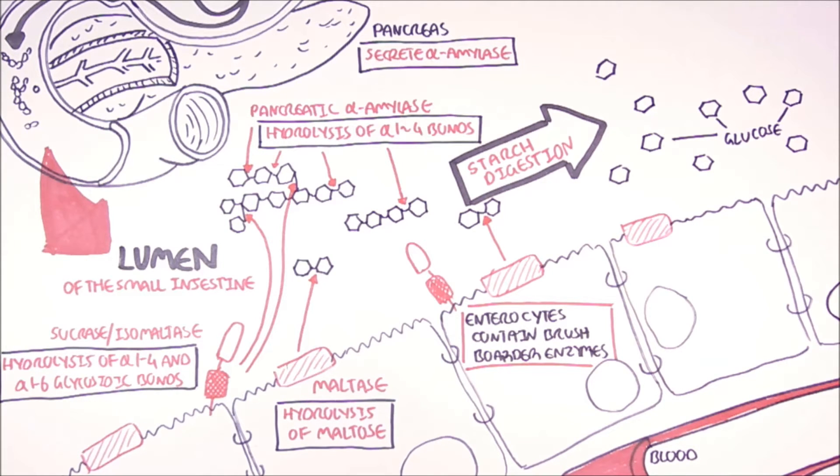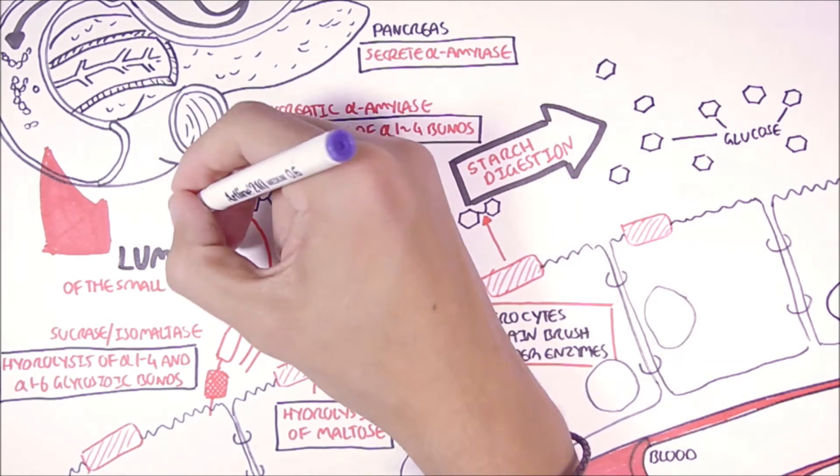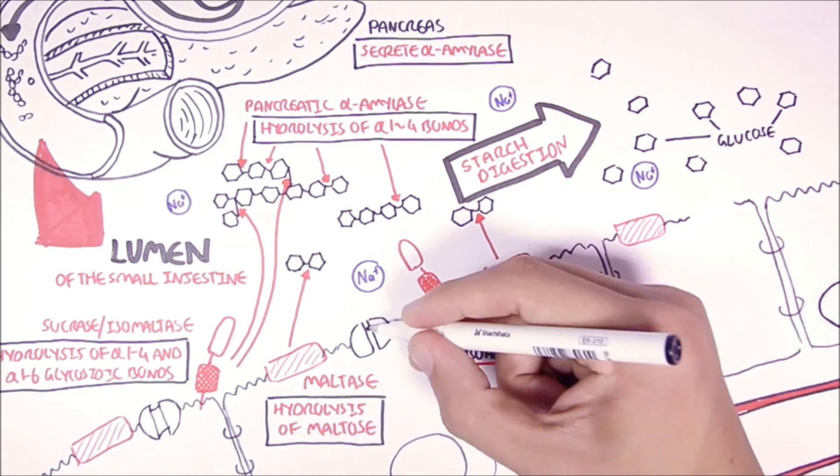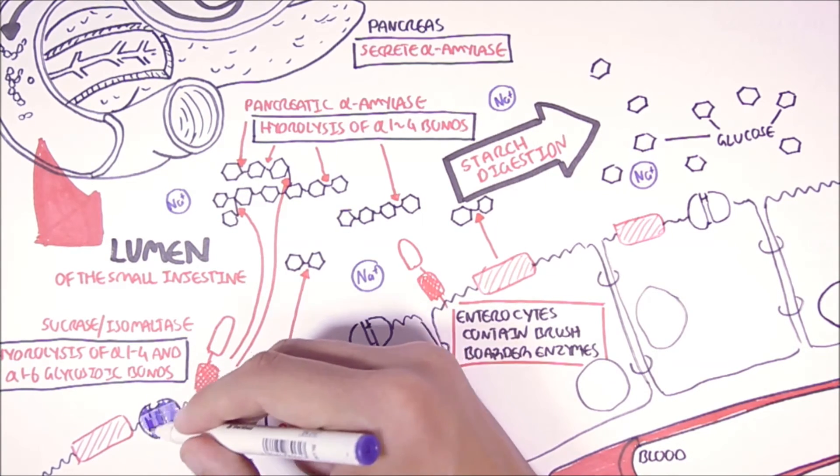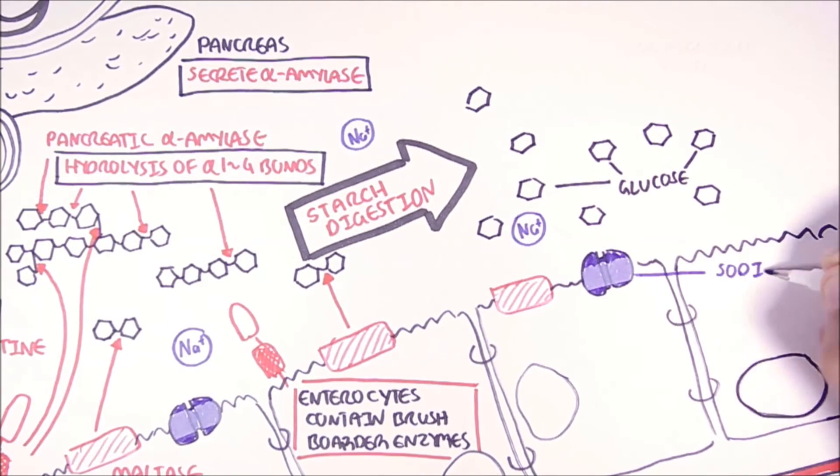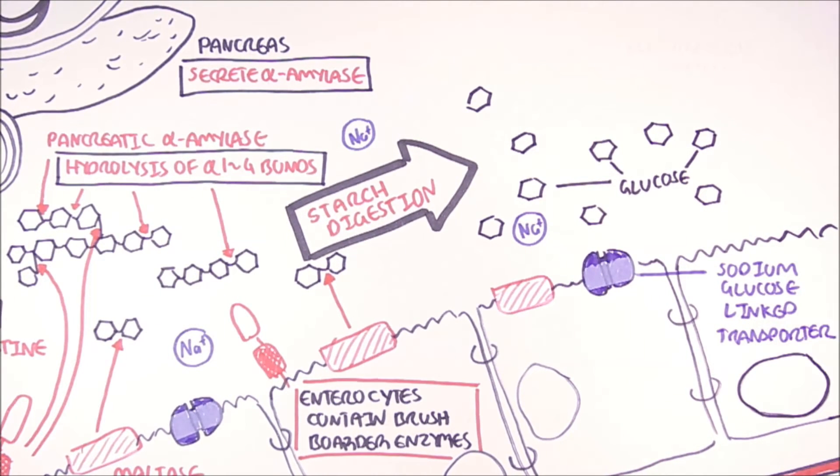Now within the lumen of the small intestine, we also have many sodium ions that actually play a critical role in the absorption of glucose into the body. What happens is that on enterocytes, we find these transporters called sodium-glucose-linked transporters or SGLTs.